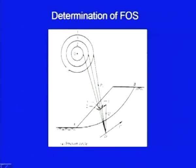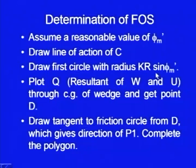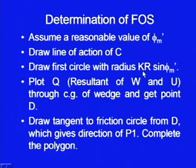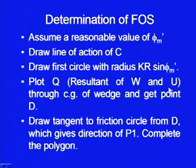The radius of this circle is k·r·sin(φ_m'), where k we get from the chart and r is the radius of the trial failure circle. Then plot Q, which is the resultant of W and U, through the center of gravity of the wedge, and get point D.